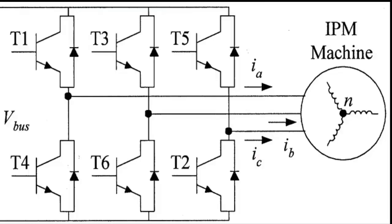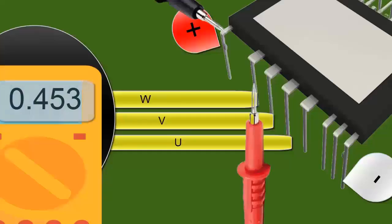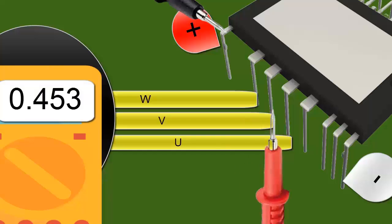8. Let's start with the integrity test of the first three diodes. Place the black probe of the multimeter on the positive input of the IPM Electronic Circuit. 9. Use the red probe to measure the points UVW. The minimum voltage activation values should be around 0.45 volts for each measurement.